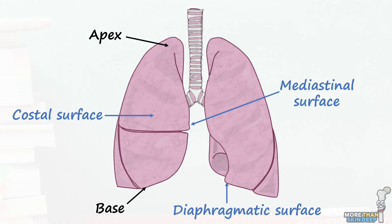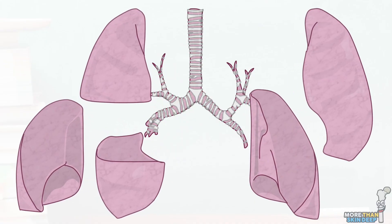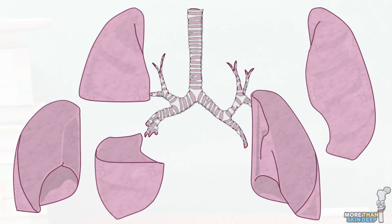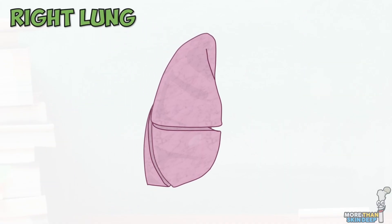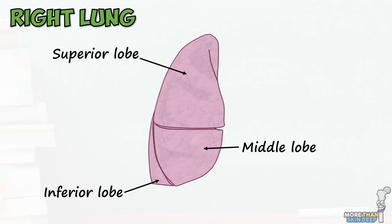Remember that the hilum of the lung lies on its mediastinal surface. The lungs are broadly divided into lobes, with five in total. The right lung is the largest and has three lobes: one superior, one middle, and one inferior. The inferior lobe is the largest, whilst the middle lobe is the smallest.